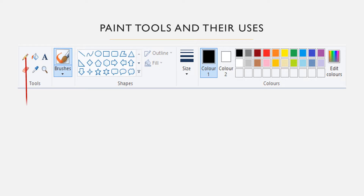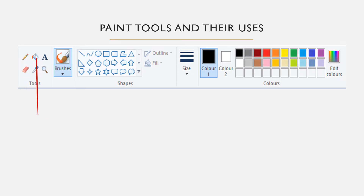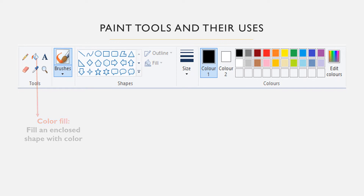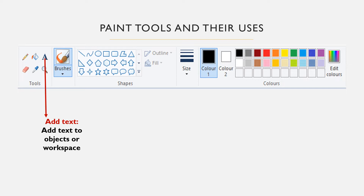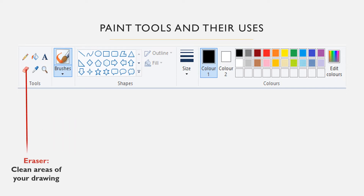The pencil tool is used to draw a free-form line or curve. The color fill tool is used to fill an enclosed shape with color — you click an area on the canvas to apply the foreground color, or right-click to apply a background color. The text tool is used to add text to your object or create text within the workspace. The eraser tool is used to clean areas of your drawing or picture. When you select the eraser tool, you can choose the eraser width by selecting the size, then clean an area of the object.